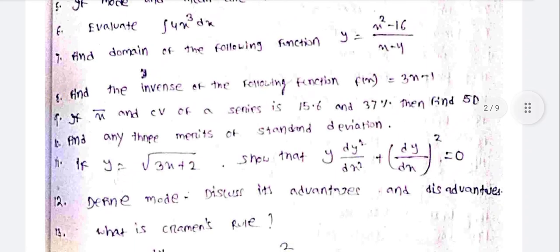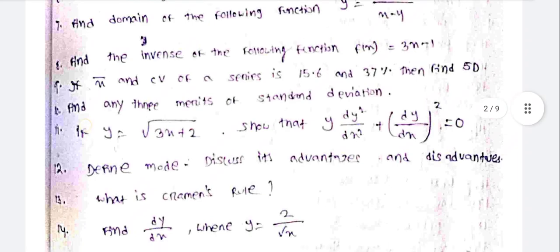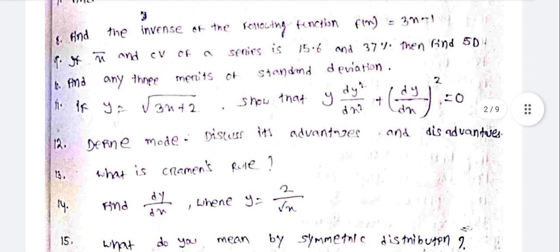Find the inverse of the following function: f(x) equal to 3x minus 1. If x-bar and coefficient of variation of a series is 15.6 and 37%, then find the standard deviation.